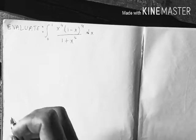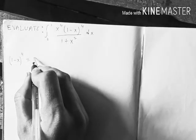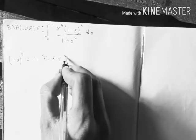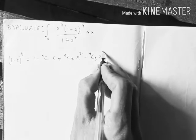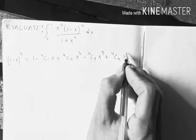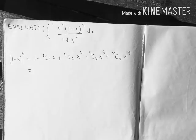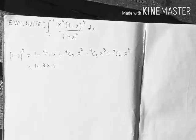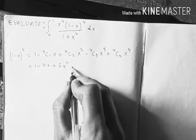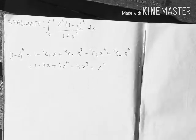Applying the binomial theorem to (1 minus x) to the 4, we get: 1 minus 4C1·x plus 4C2·x² minus 4C3·x³ plus 4C4·x⁴. Computing the combinations: 4C1 = 4, 4C2 = 6, 4C3 = 4, and 4C4 = 1. So the expansion is 1 minus 4x plus 6x² minus 4x³ plus x⁴.